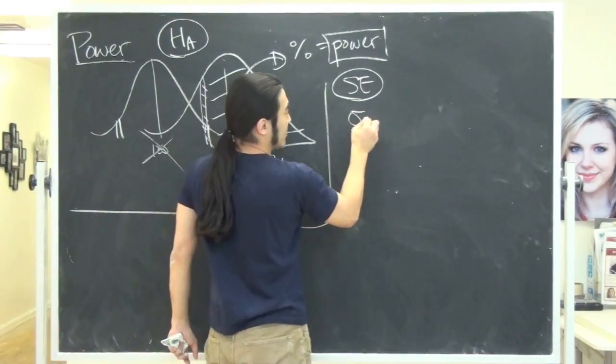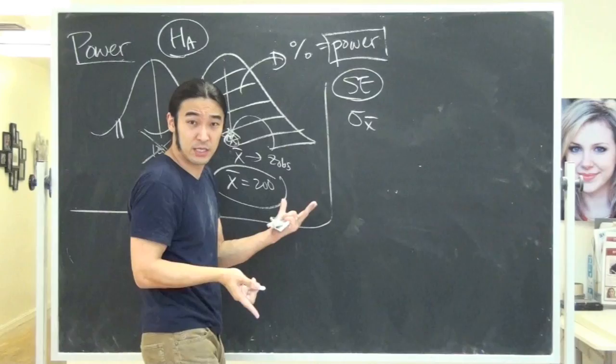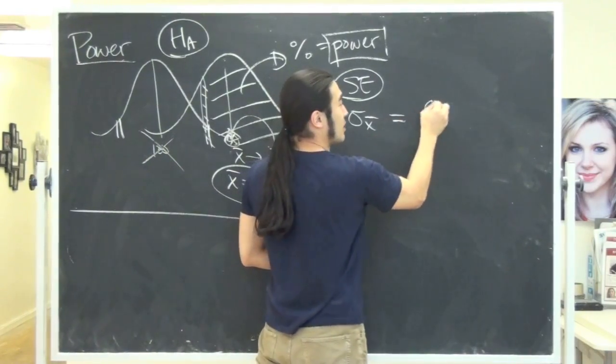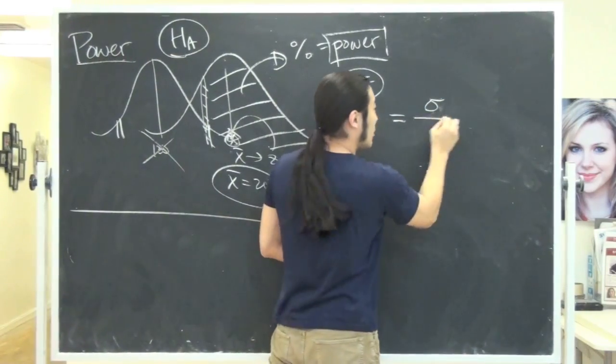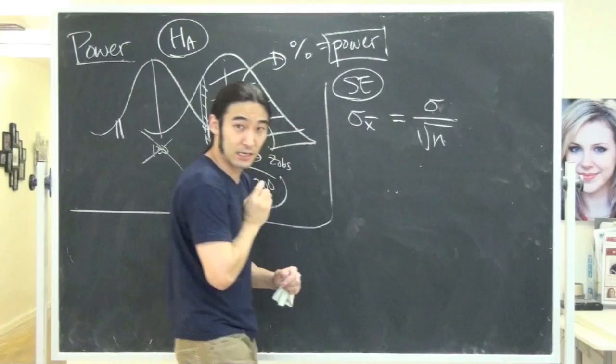You're dealing with samples, so the key here is the standard error. That is what's key. And probably he writes it like this, but the standard error is key. And how do you get the standard error? If you remember, that's the standard deviation over the square root of the sample size.